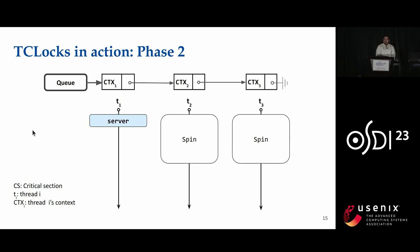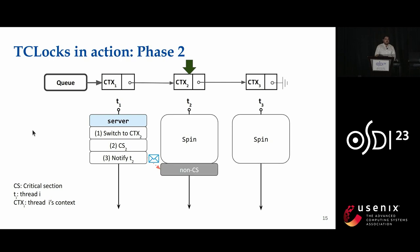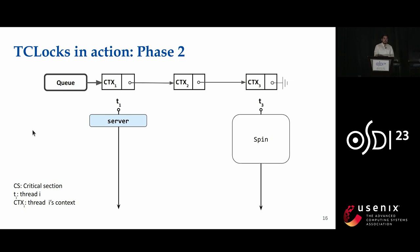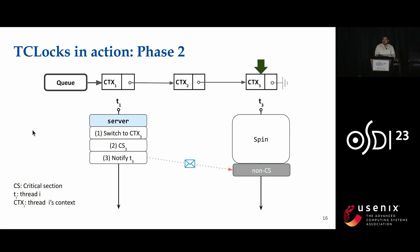The server starts executing phase two, processing client requests. The server first switches to thread two's context, executes thread two's critical section, then notifies thread two that its critical section is complete. When thread two gets the notification, it can start executing its non-critical section. Meanwhile, the server continues executing thread three's critical section, then notifies thread three that its critical section is complete. Once thread three gets the notification, it can start executing its non-critical section. The server can then repeat this process for other waiters.